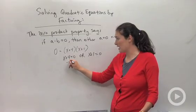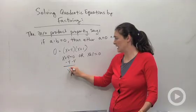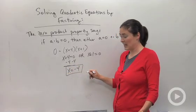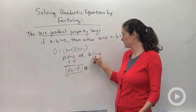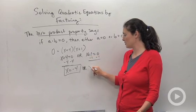This is how I solve for x. Subtract 4 from both sides, and I'm going to get my solutions. x equals negative 4, or x equals negative 1.